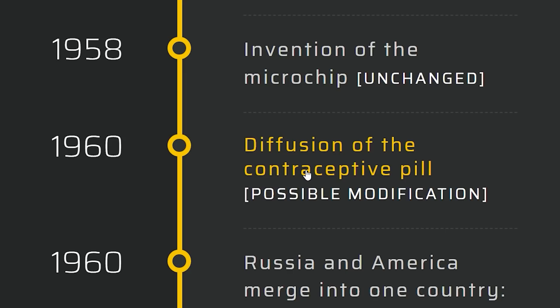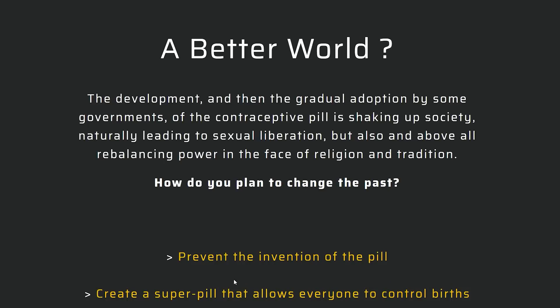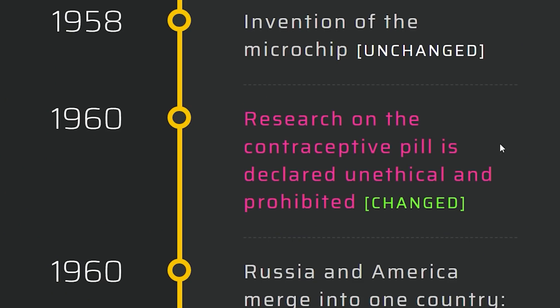Why not change this pill while we're at it? A super pill that allows everyone to control births — no, that doesn't sound fun. Let's prevent the invention. Pretty much, no one is going to be able to use that, and there's going to be zero effective birth control methods. A pretty effective one is just going to vanish. I think we're in for some overpopulation.